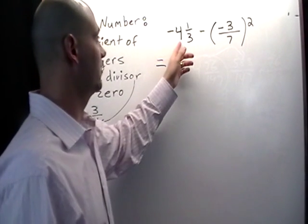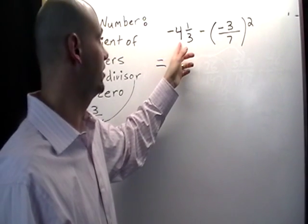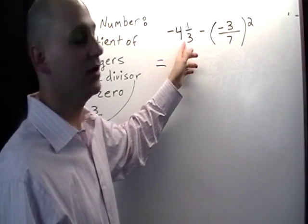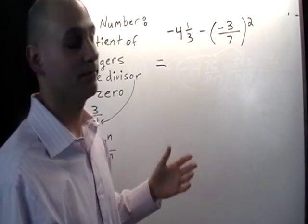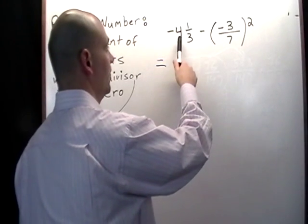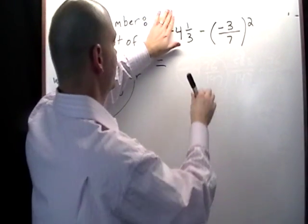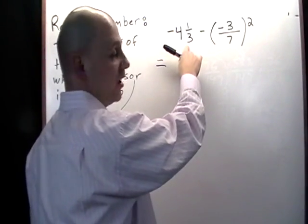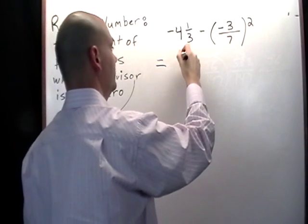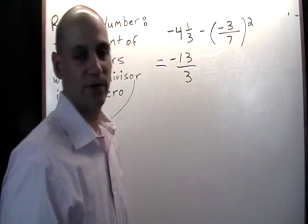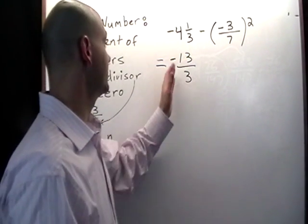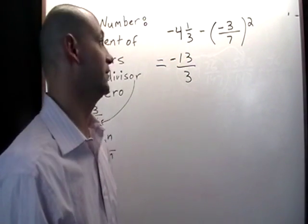So in the first step I'm going to convert this into an improper fraction by taking the whole number 4 times the denominator plus the numerator all divided by 3. So let's have a look here. I'm going to just forget about the negative sign for a second. 4 times 3 is 12 plus 1 is 13 and that means negative 4 and a third is the same thing as negative 13 over 3.